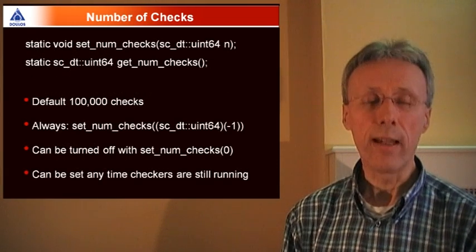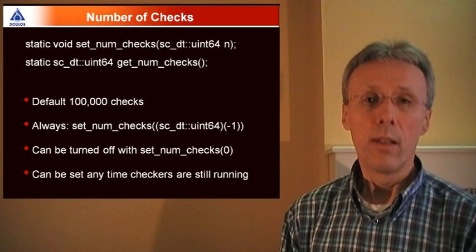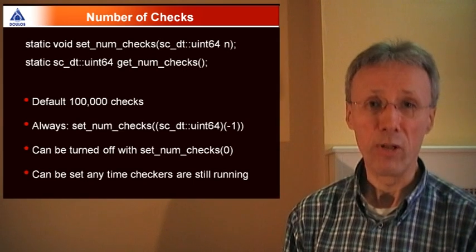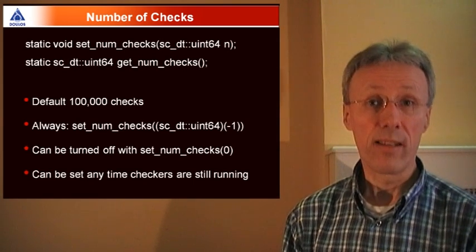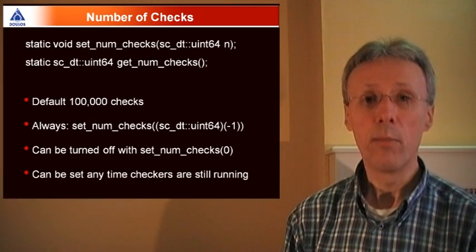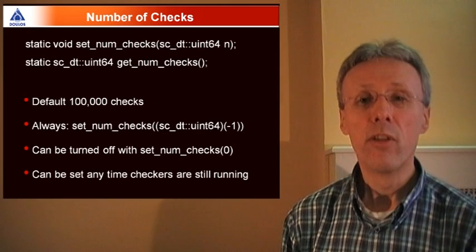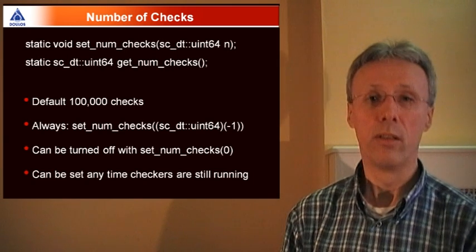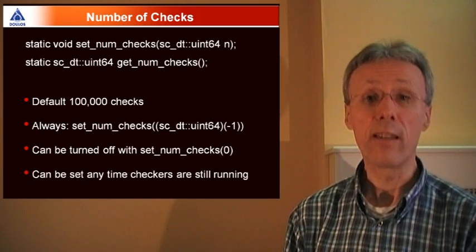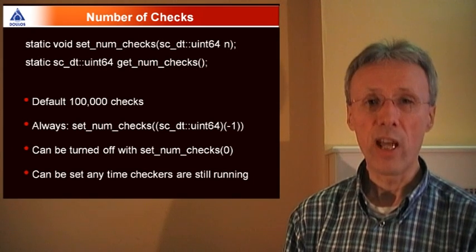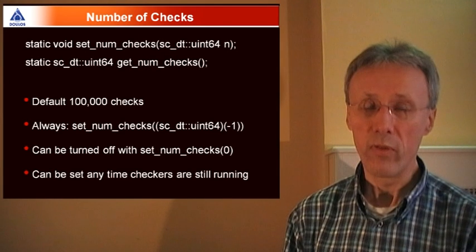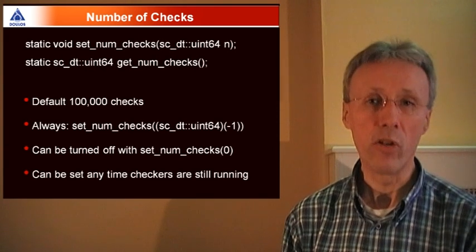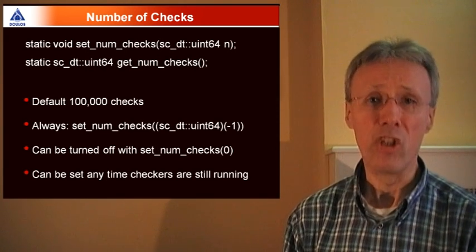You can set the number of checks that the checker performs. This is necessary because the checks aren't free. They're relatively expensive compared to not doing any checking at all. The default number of checks is set rather arbitrarily to 100,000, but you can override that by calling the setNumChecks method. If you call setNumChecks with a very large integer, it will effectively keep on checking throughout the whole of simulation. Or you can turn off checks by calling setNumChecks zero. You can adjust the number of checks at any time prior to the number of checks being reduced to zero. Once the number of checks hits zero, you can't switch the checks on again, primarily because that was going to be too difficult to implement.